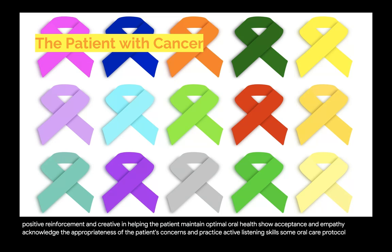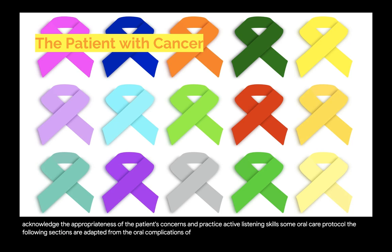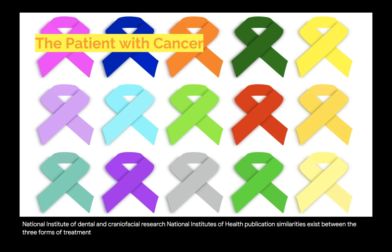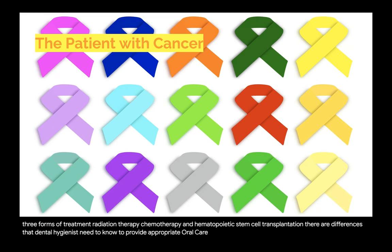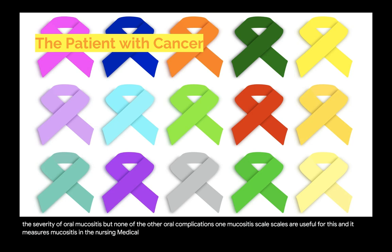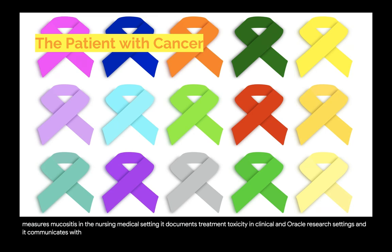The oral care protocol is adapted from 'Oral Complications of Cancer Treatment: What the Oral Health Team Can Do,' from the National Institute of Dental and Craniofacial Research, National Institutes of Health. Similarities exist between radiation therapy, chemotherapy, and hematopoietic stem cell transplantation, but there are differences that dental hygienists need to know to provide appropriate oral care. Mucositis grading scales are useful for measuring mucositis in the nursing and medical setting, documenting treatment toxicity in clinical or research settings, and communicating interprofessionally.